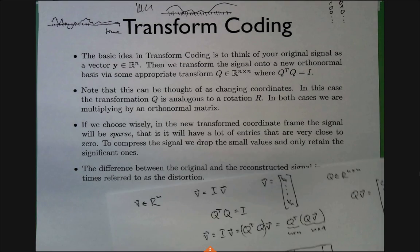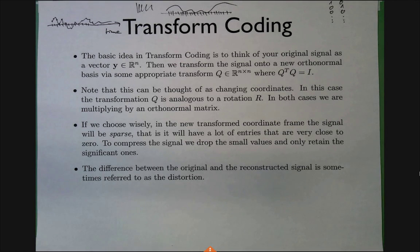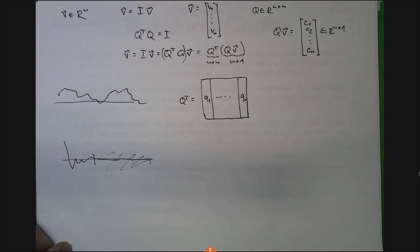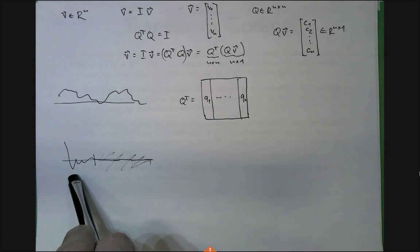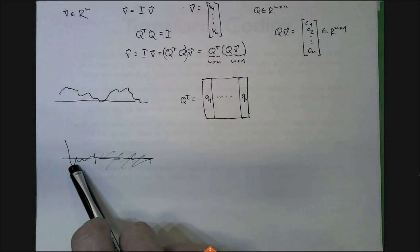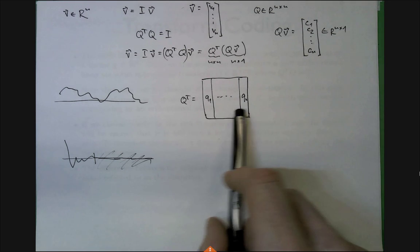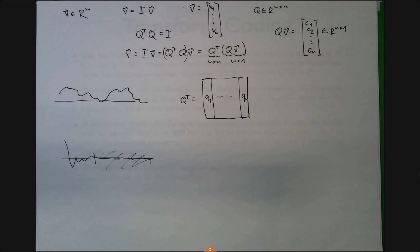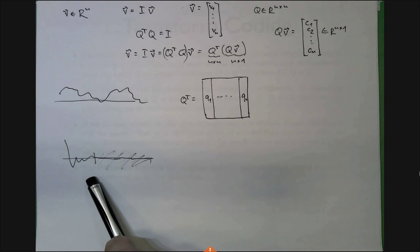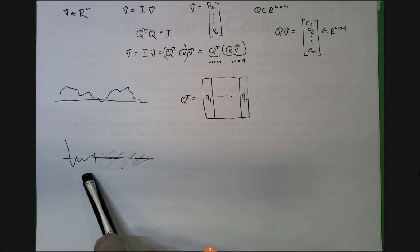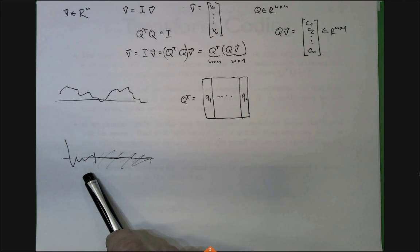This concentration doesn't happen for an arbitrary Q matrix — it happens for the cleverly chosen Q corresponding to the DCT or some other clever transformation. Not just any orthonormal matrix would do this.